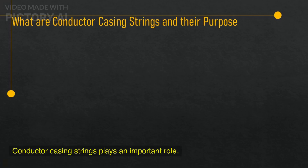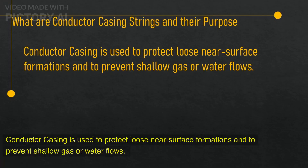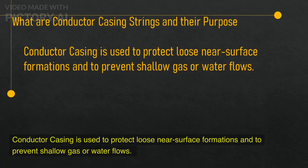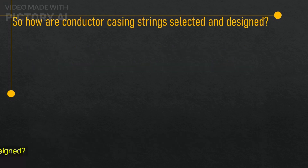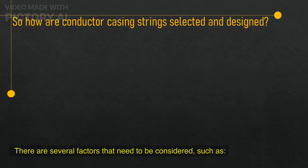Conductor casing strings play an important role. Conductor casing is used to protect loose near-surface formations and to prevent shallow gas or water flows. So how are conductor casing strings selected and designed? There are several factors that need to be considered.